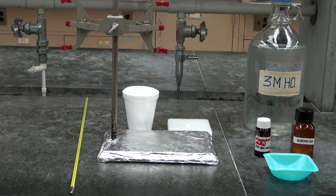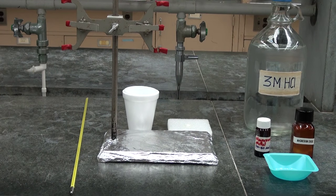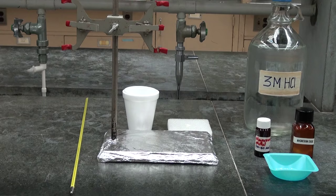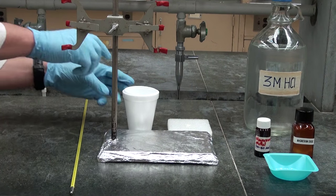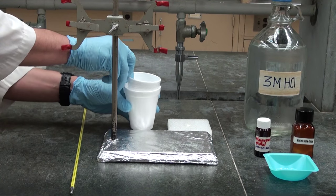A coffee cup calorimeter can be used to measure the enthalpy change accompanying a chemical reaction. It's a very simple apparatus consisting of two polystyrene coffee cups nested within one another.